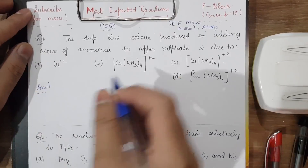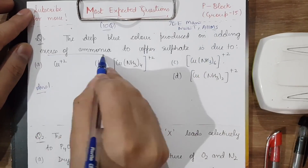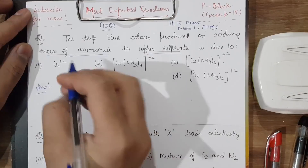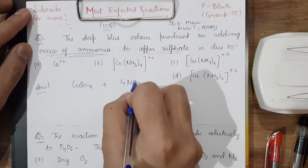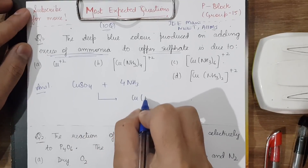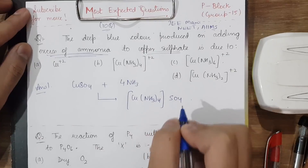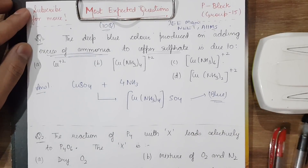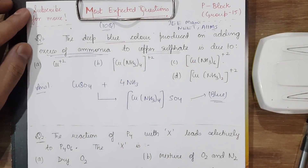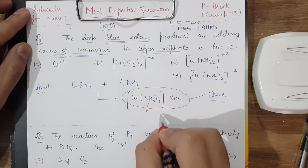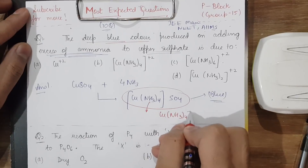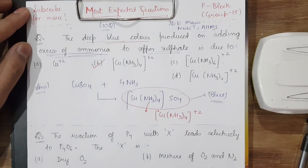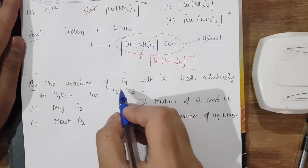The deep blue color produced on adding excess of ammonia to copper sulfate is the question. We have CuSO₄ and we are adding 4 moles of ammonia, which gives us [Cu(NH₃)₄]SO₄. This compound is blue in color, so the deep blue color is due to the complex ion [Cu(NH₃)₄]²⁺. The correct answer is option B.